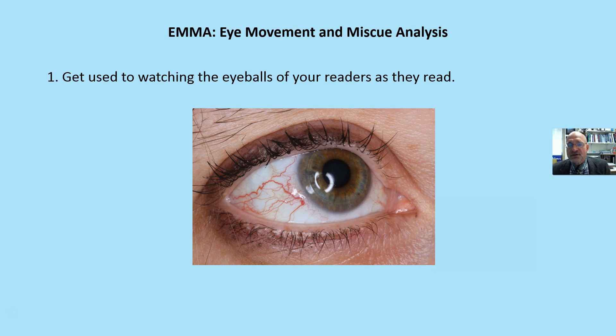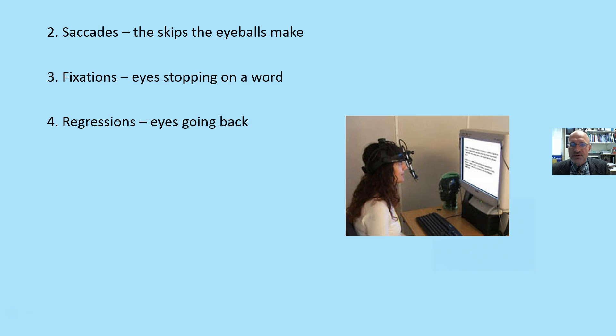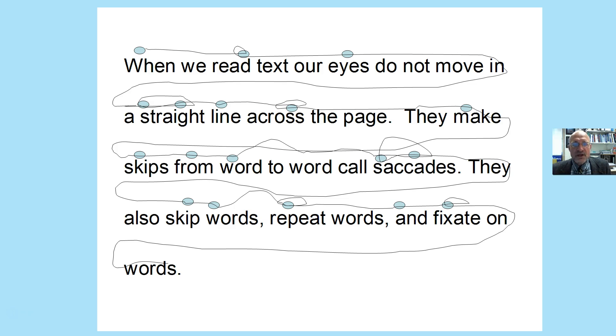Get used to watching the eyeballs of your students as they read. They tell us a lot about how that student is processing the text. Saccades are the skips that the eyeballs make, moving from one to the next. A fixation is when your eye stops on a word, and regression is when your eyeballs go back when reading.